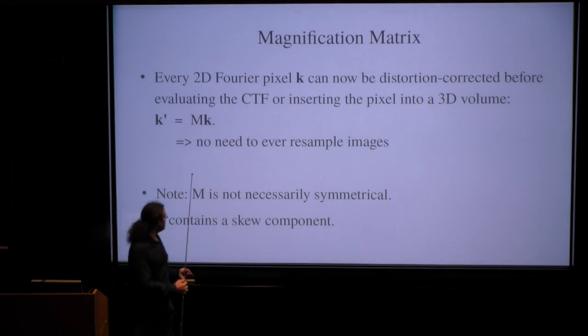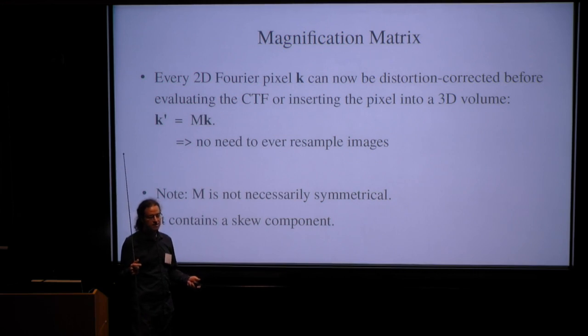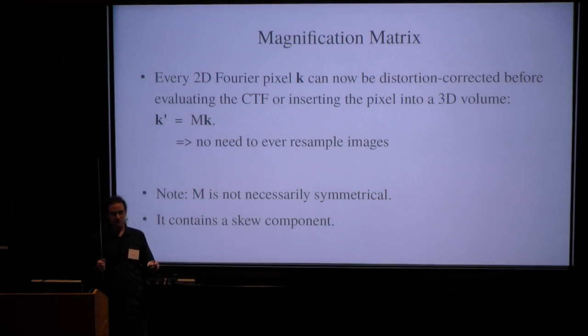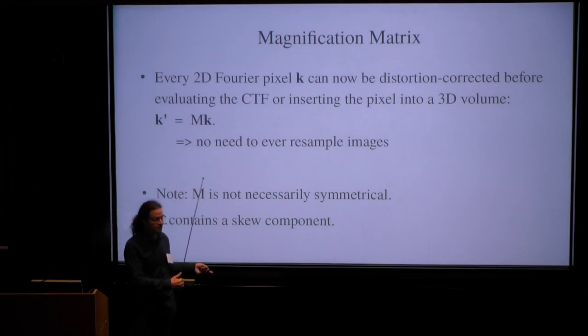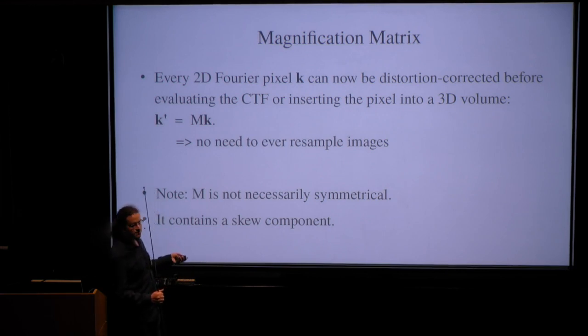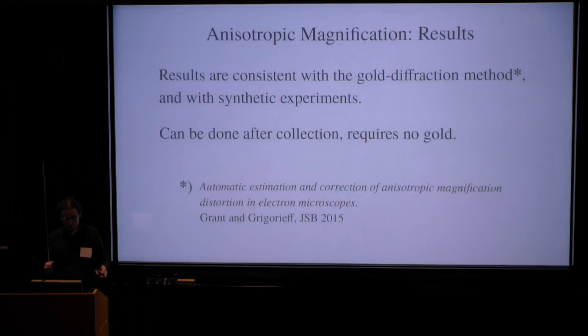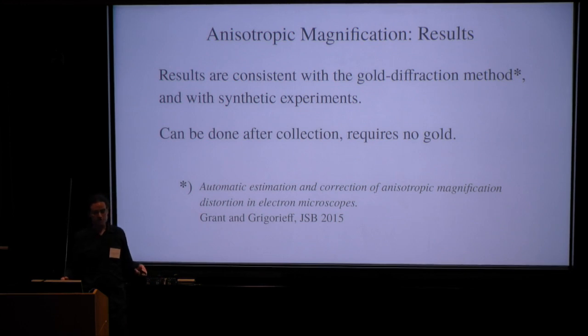Also, another caveat, the M is, I have defined it as as general as possible. It's really a general 2x2 matrix. So it's not necessarily symmetrical. So it cannot necessarily be expressed as just two magnifications and an angle in between. But it can also have a skew component. This is known for light cameras. We have seen no evidence that it actually happens in cryo-EM. But Relion would support it. And if you would like a symmetrical matrix, you can symmetrize it. And the results of this are consistent with the more traditional methods. However, this can be done after collection. So you don't need access to the microscope to do it.